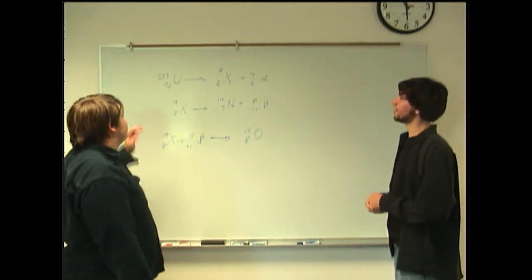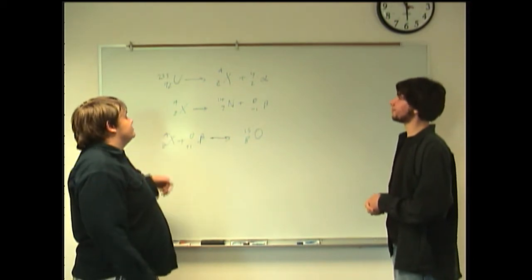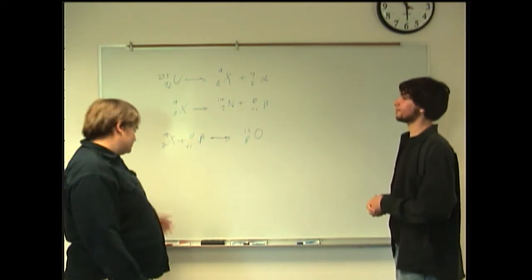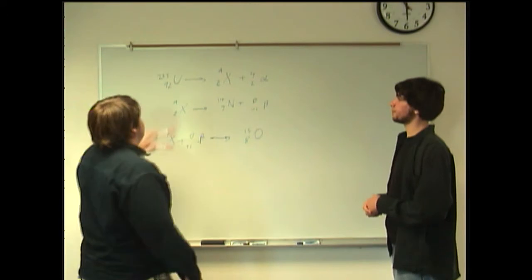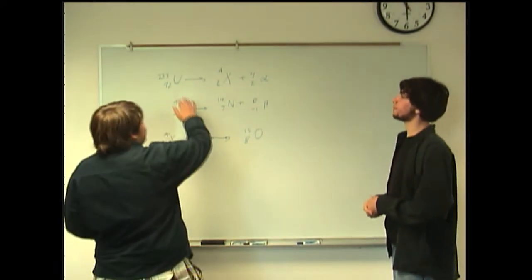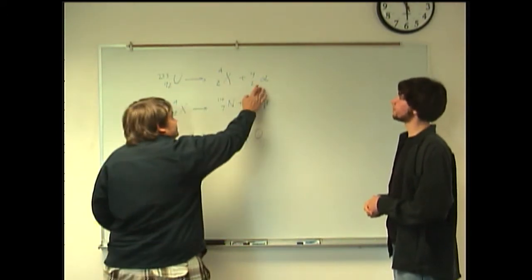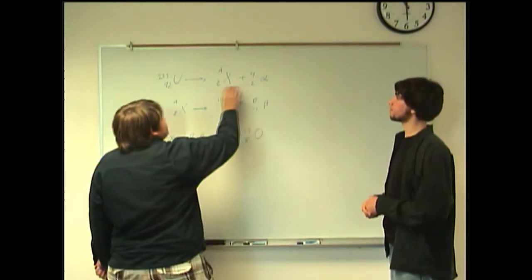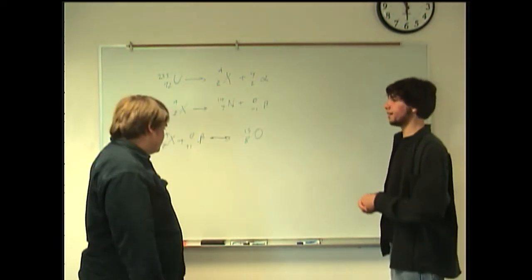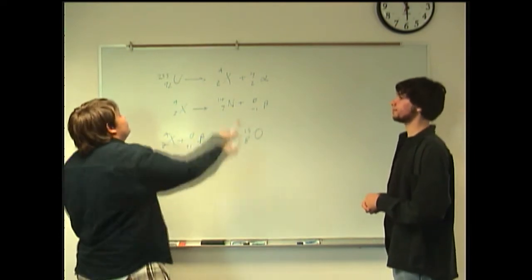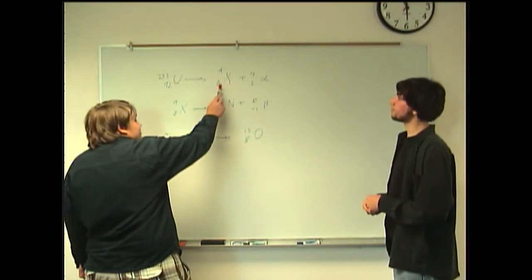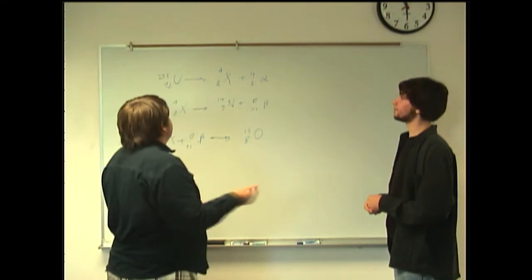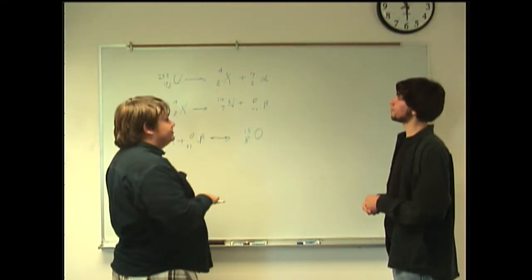So I have three different decay problems that we can work through. Let's start with this one. Uranium-235 undergoes alpha decay and then forms the alpha particle and some unknown nucleus. What we want to know is the identity of this right here. So, how would you go about this?